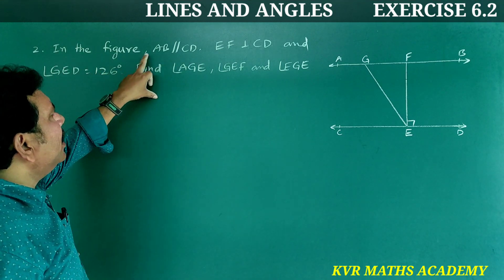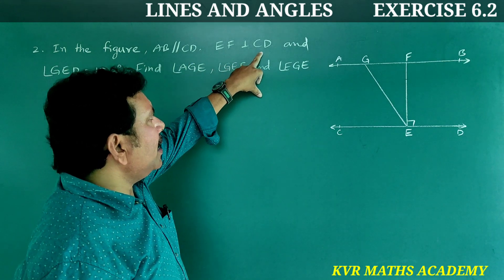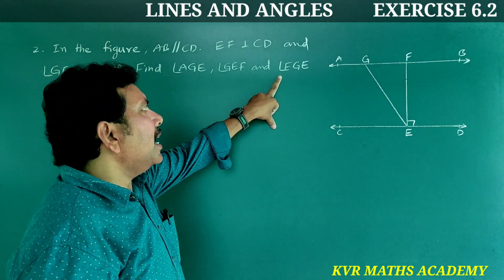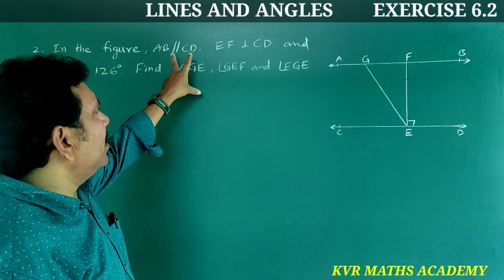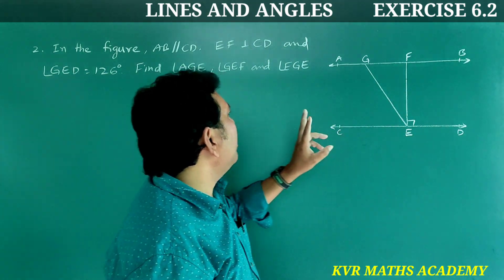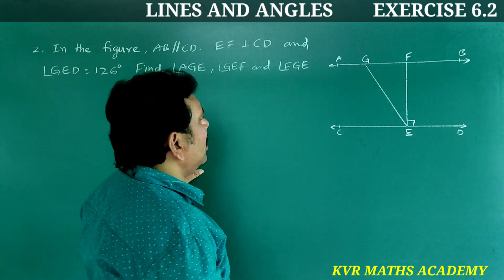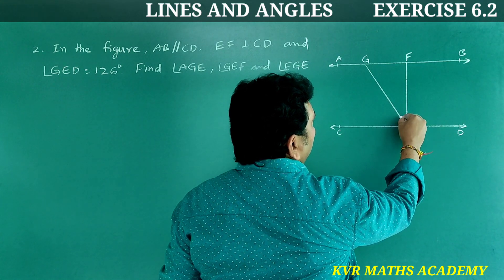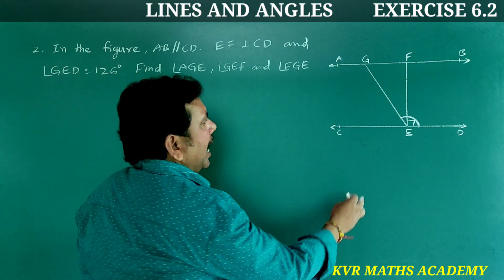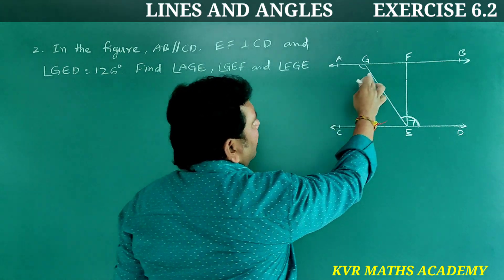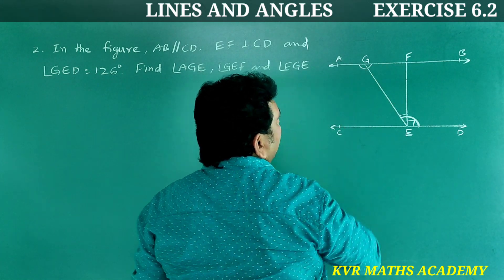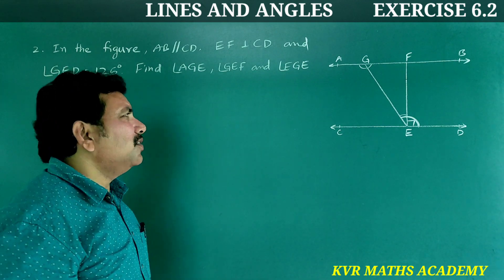Second question: In the figure, AB is parallel to CD, EF is perpendicular to CD, and angle GED is equal to 126 degrees. Find angle AGE, angle GEF, and angle FGE.